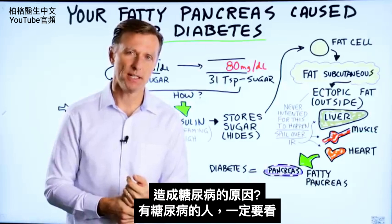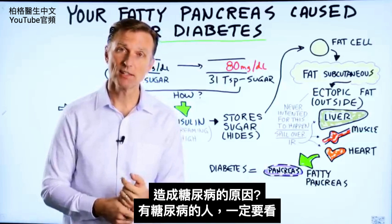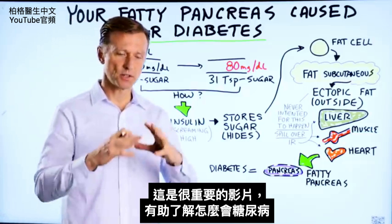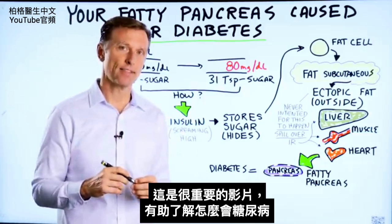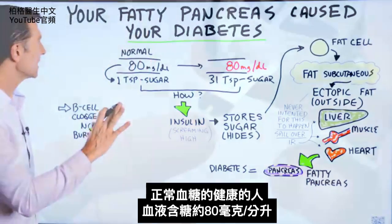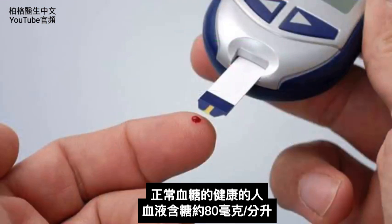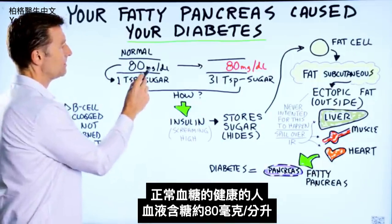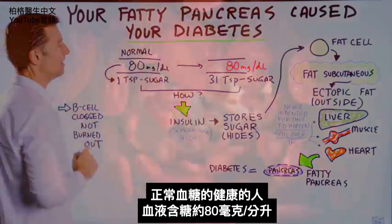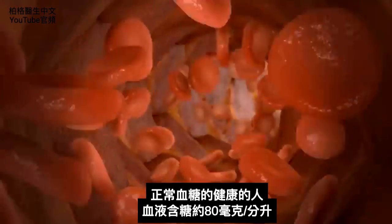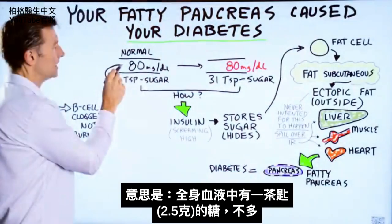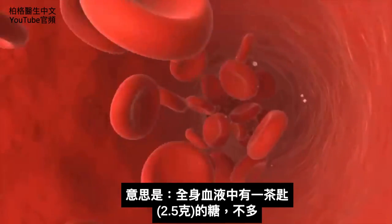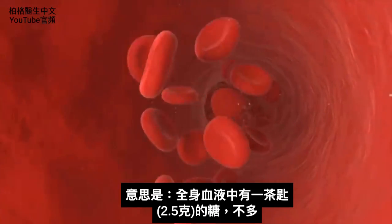Let's talk about what caused your diabetes. If you have diabetes, this video is for you — it's a very important video for you to understand how you got there. First thing I want to talk about is normal blood sugar. A person who is healthy should normally have about 80 milligrams per deciliter of sugar in their blood, which means you basically have about one teaspoon of sugar in your blood.